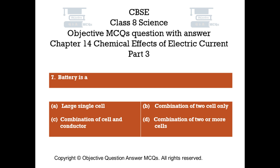Question number 7. Battery is: Option A: A large single cell. Option B: Combination of two cells only. Option C: Combination of cell and conductor. Option D: Combination of two or more cells.